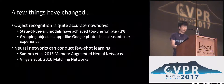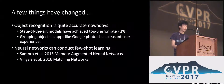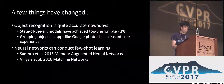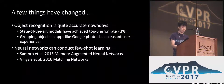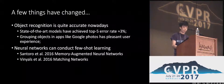A few things have changed in recent years. Object recognition is quite accurate nowadays. State-of-the-art models have achieved a top-five error rate of 3% on ImageNet classification tasks. This indicates that we can obtain high-quality machine label image annotations for web data. Second, recent breakthroughs demonstrate that neural networks can conduct few-shot learning. Memory-augmented neural networks and matching networks achieve very promising performance on few-shot learning.